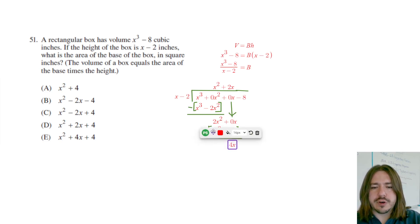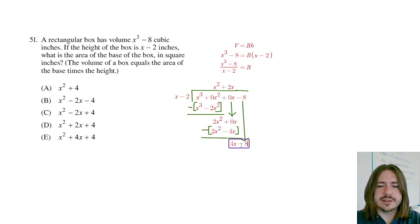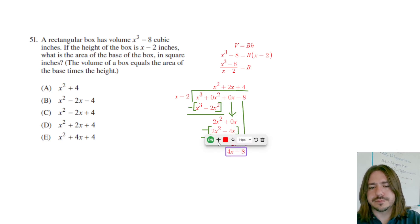When I subtract, 2x squared minus 2x squared is zero. That's again intentional. Zero minus negative 4 is going to give me positive 4x. Once you have done the subtraction, bring down the next term, which is our last term, minus 8. And so again, x times what is 4x? That would be 4. So 4 times x minus 2 would be 4x minus 8. When I do the subtraction I get 0, which means there is no remainder.